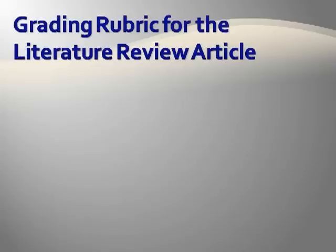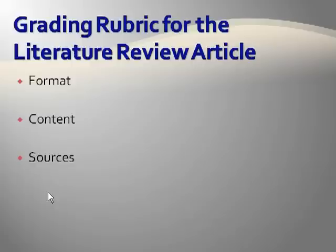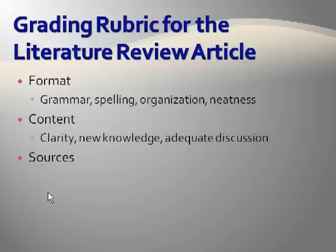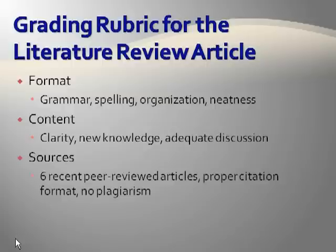The previous slides have given you some general advice on how to review your colleague's work. For class next week, we will use a grading rubric to help you focus your reviewing efforts. I will use the same rubric to grade your literature review article when you turn it in to me, so you can see that there is a benefit to incorporating reviewers' advice. There are three main parts to the rubric: format, content, and sources. Format includes things like grammar, spelling, and organization — things found on the fatal errors list. Content asks you to focus on clarity, whether the literature review article contains new knowledge, and if the information is adequately discussed. Finally, the purpose of the sources section is to ensure that the author has used at least six peer-reviewed articles, has cited them correctly, and has not plagiarized.